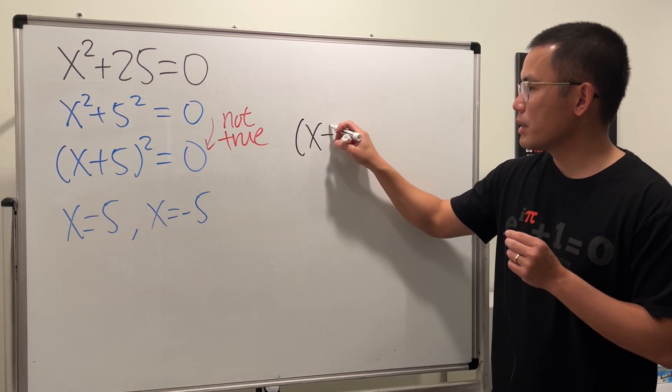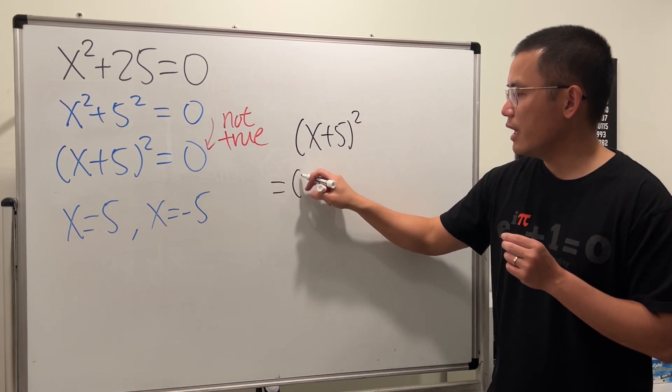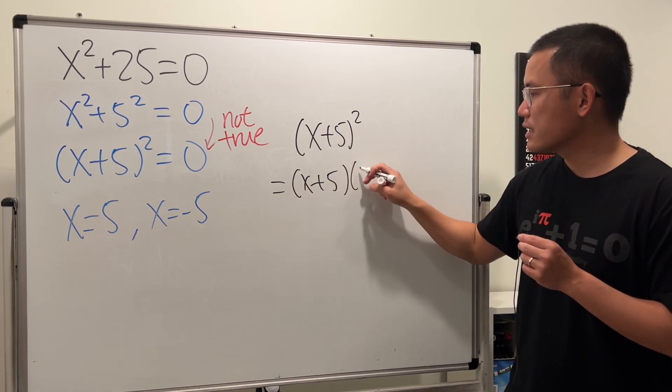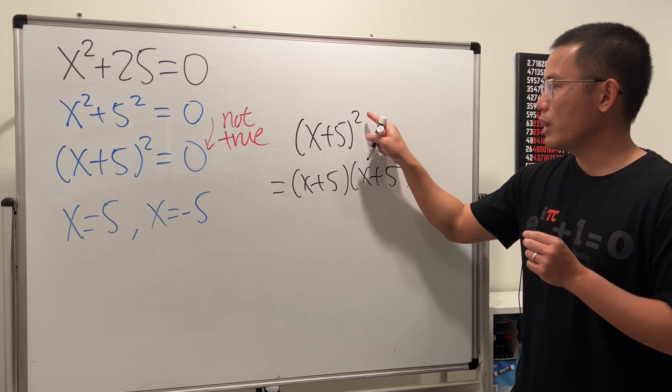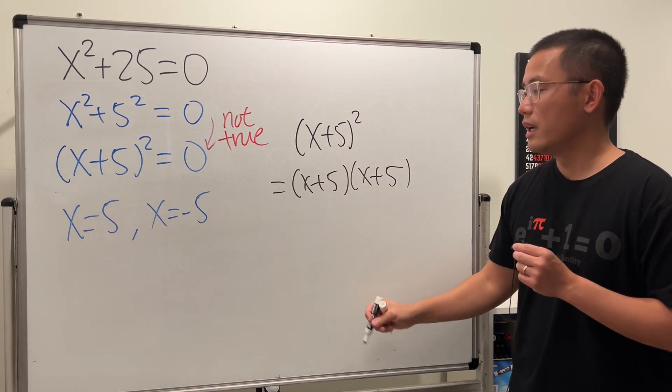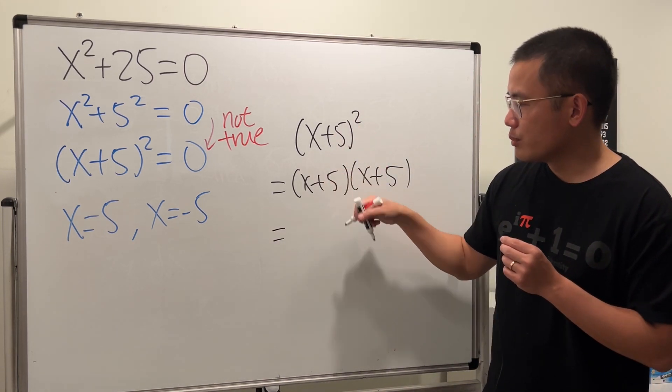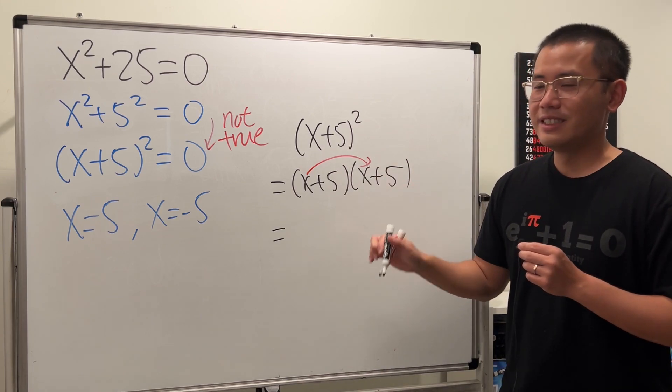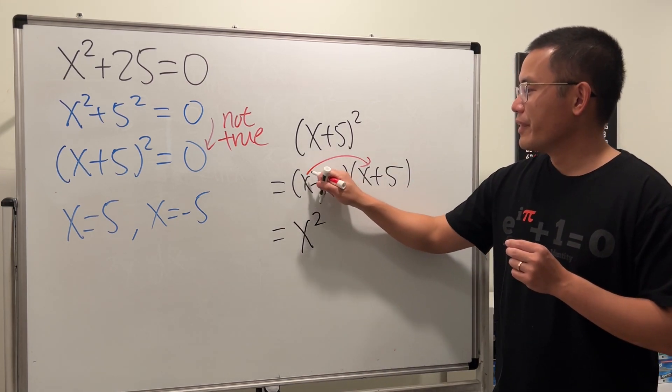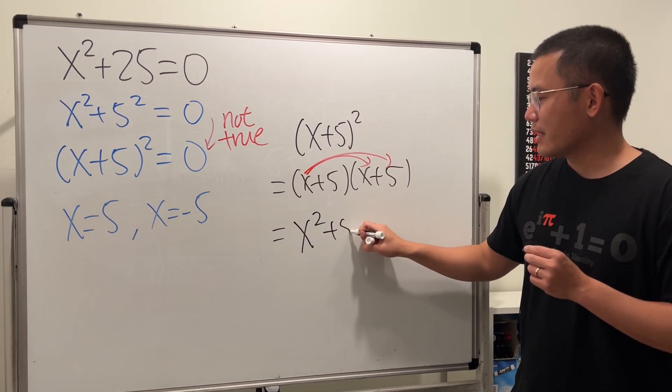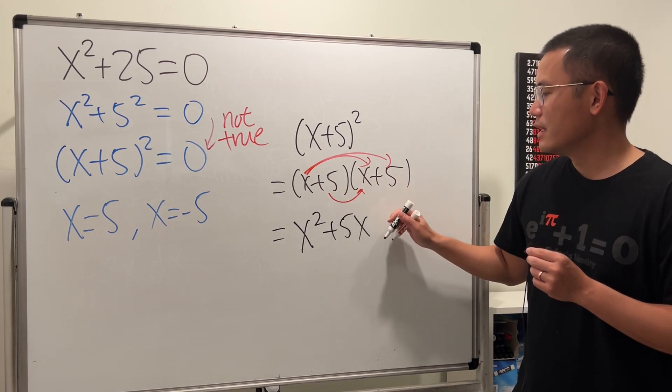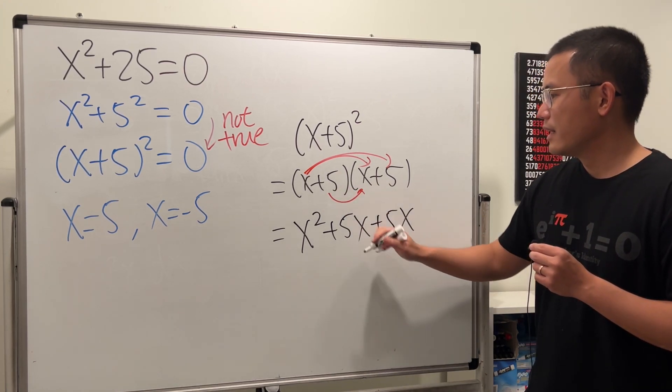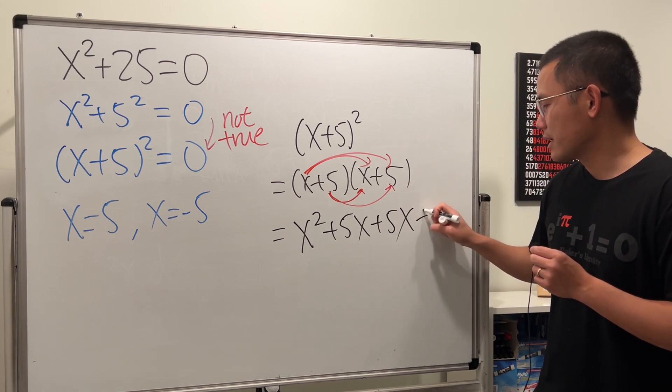Notice, if you have (x + 5)², this is the same as saying (x + 5)(x + 5). When you have two of them, write it down twice. And then you will have to multiply them out. This times this is x². This times this is +5x. Continue, take this now times this is +5x.